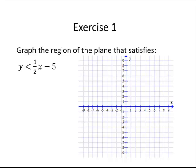Here we are asked to graph the region of the plane that satisfies y is less than one half x minus 5. I am really going to graph y equals one half x minus 5. I am going to use a dotted line because it is a strict less than inequality. One half x minus 5 is in slope-intercept form, so I will plot the y-intercept at negative 5.